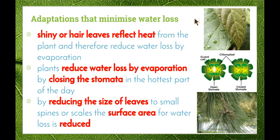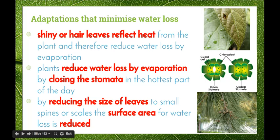One adaptation is that plants have shiny or hairy leaves that help reflect heat from the plant and therefore reduce water loss by evaporation. Here we can see tiny hairs on the surface of a leaf, which reflect heat and help reduce water loss by evaporation.